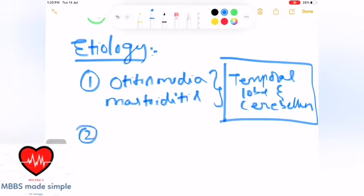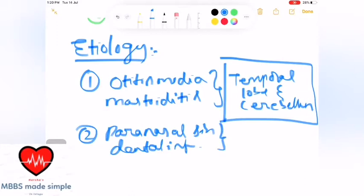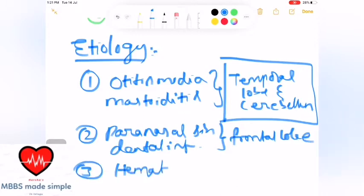Second one is paranasal sinuses and dental infections. The spread of brain abscess is to the frontal lobe. These two are direct spreads.